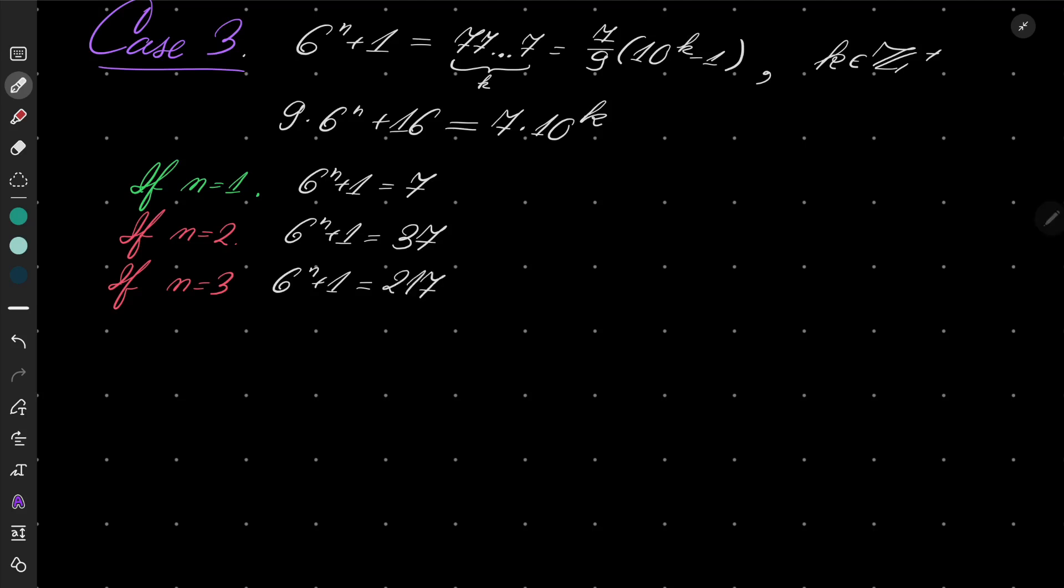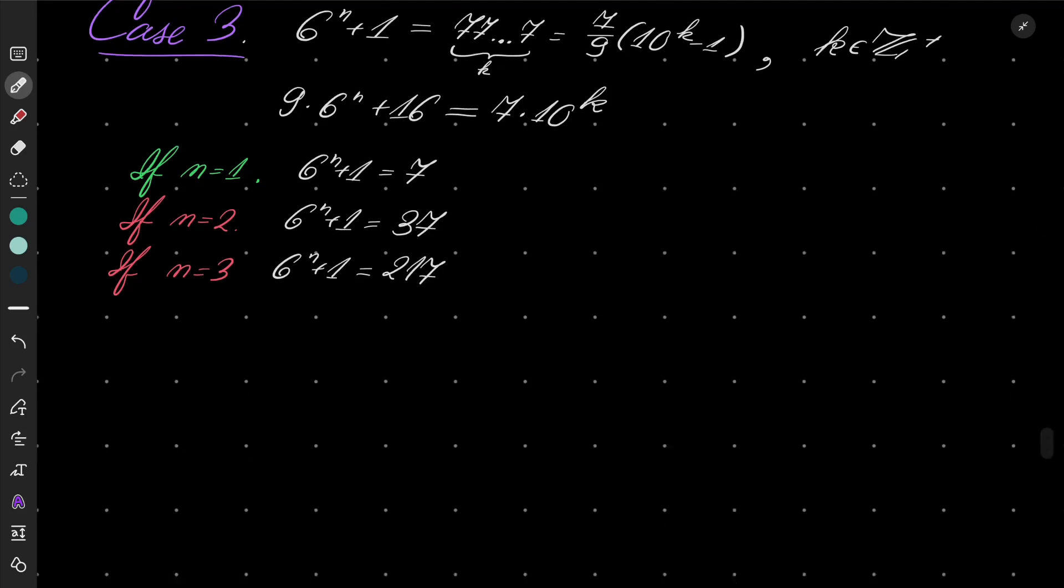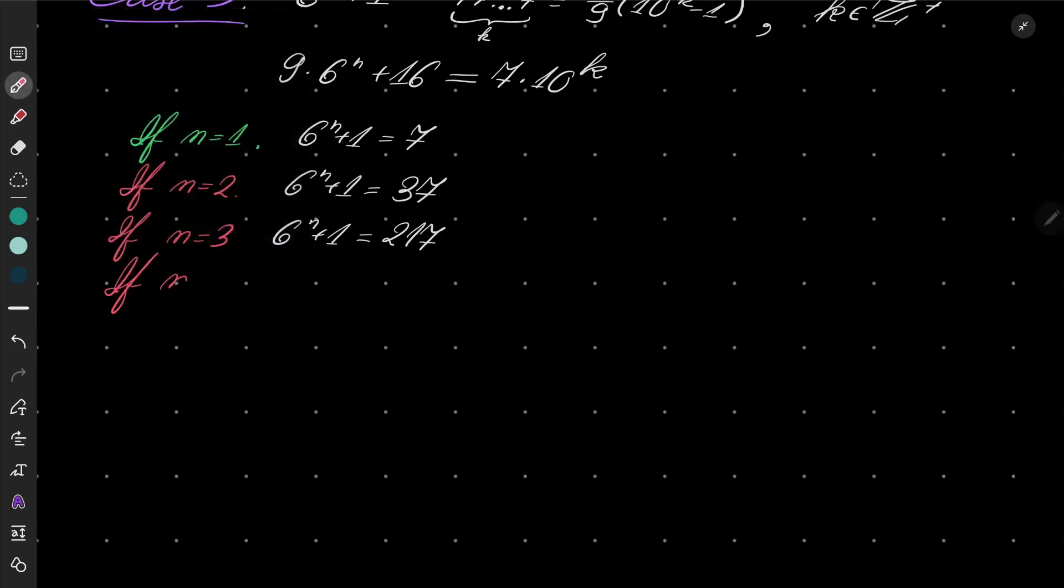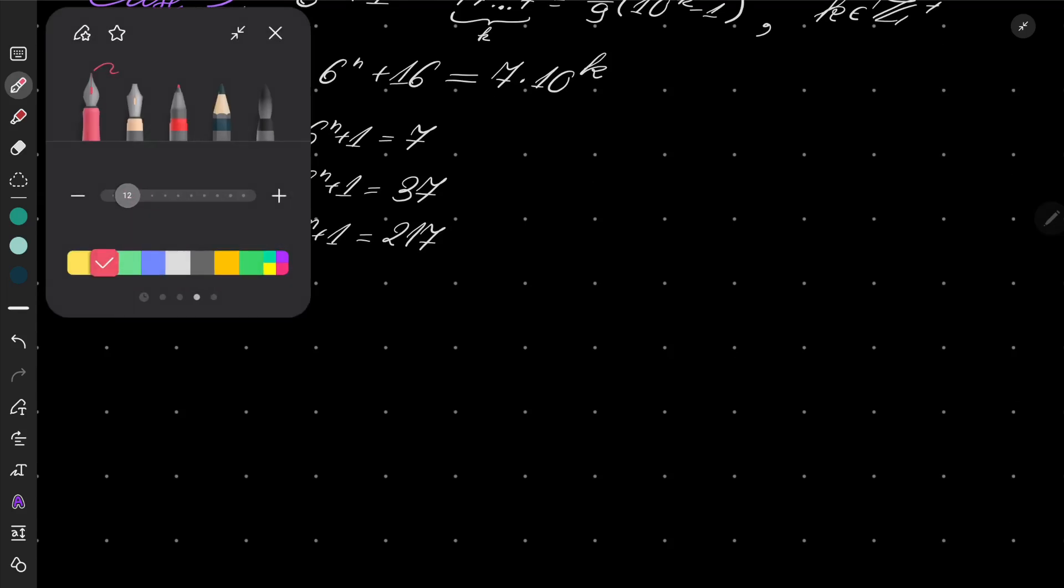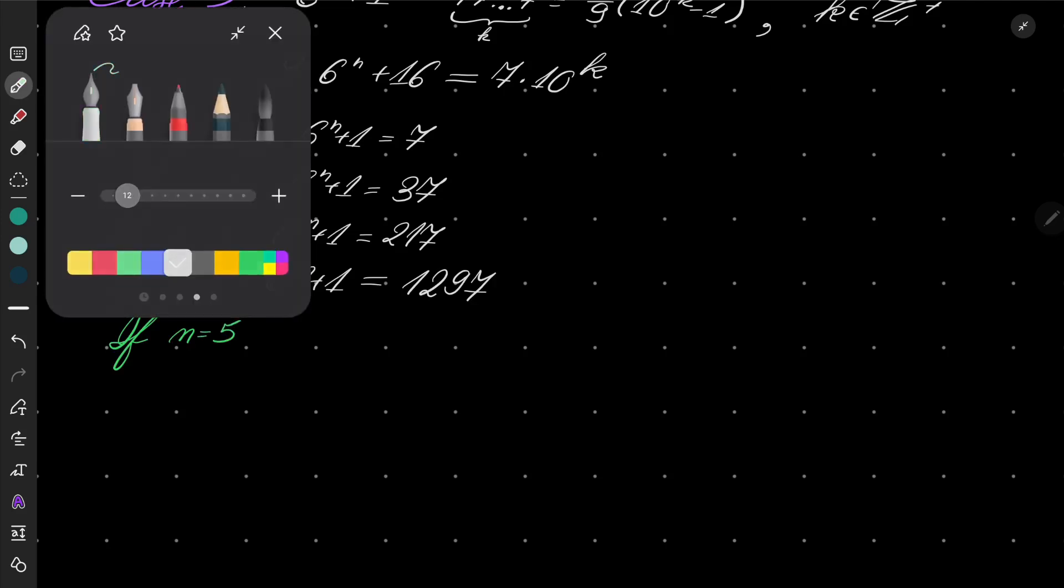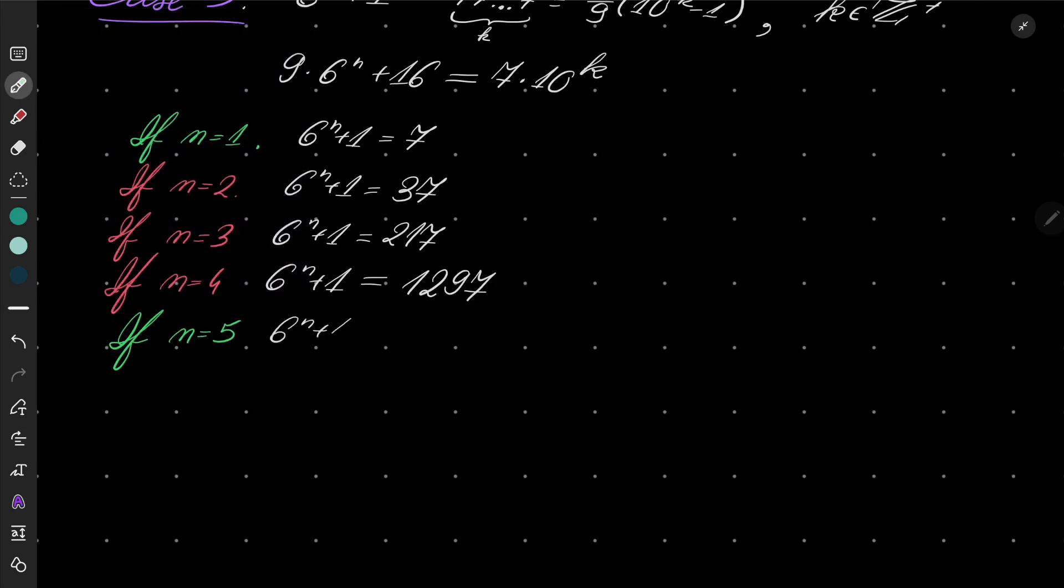If n equals 4, then 6 to the power of n plus 1 equals 1297. And finally, if n equals 5, then 6 to the power of n plus 1 has four 7's.